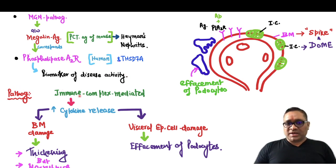Pathogenesis is immune complex mediated. So what will happen? Cytokine will be released. What they will do? They will cause basement membrane damage and visceral epithelial cell damage. Because of basement membrane damage, you will see thickening but no rupture. Remember, you can see there is no rupture, only thickening because of immune complex deposition.